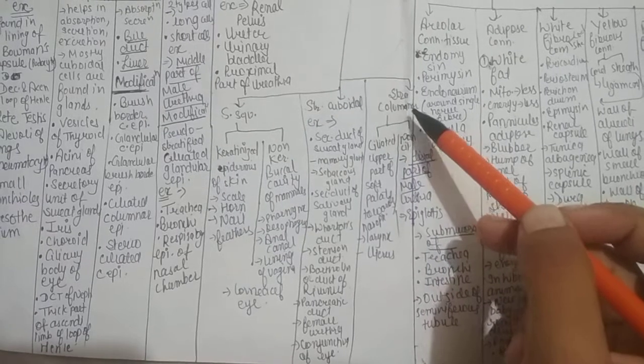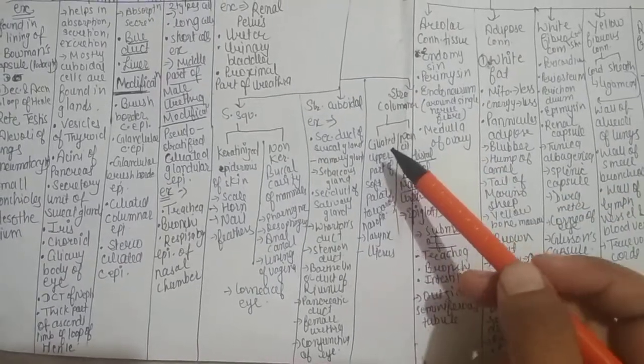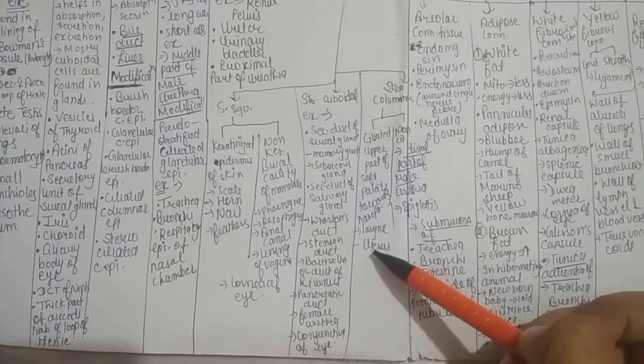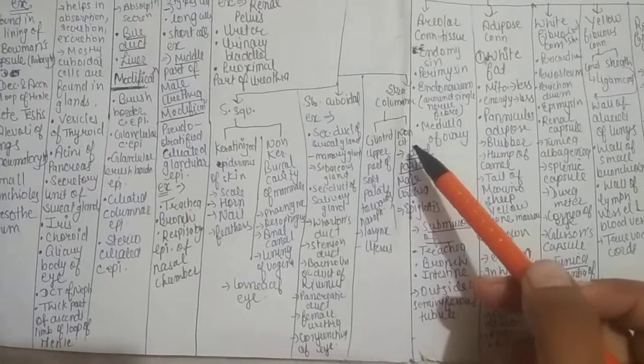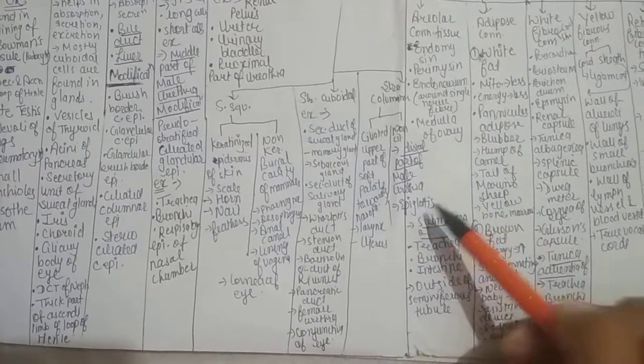Stratified columnar epithelium can be further divided into ciliated and non-ciliated. Ciliated are present in upper part of soft palate towards nasopharynx, larynx, and uterus. Non-ciliated stratified columnar cells are found in distal parts of male urethra and epiglottis. Thanks for watching.